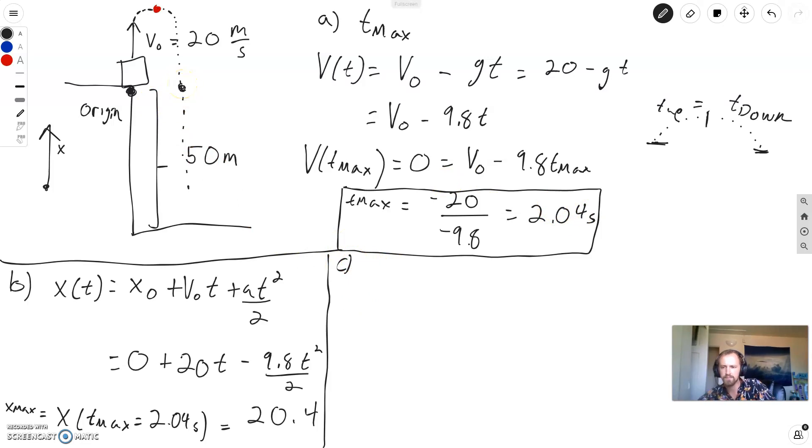So why don't I just find, when does x of t equals 0? Right? It equals 0 at 2 times. At time equals 0. And, at this special time over here. And, if what I just said is true, we should get 4.08. So, x of t equals 0 equals the same thing over here. So we have 20t minus 9.8t squared over 2. We can factor out a t. Or, you can do a quadratic equation from this if that makes more sense to you. 20 minus 9.8t over 2.